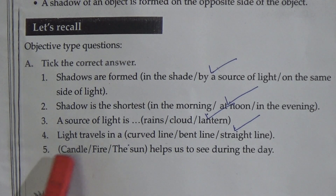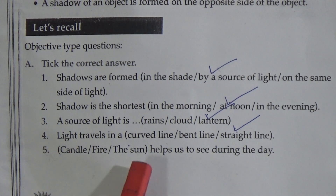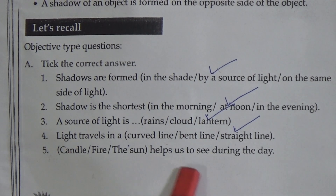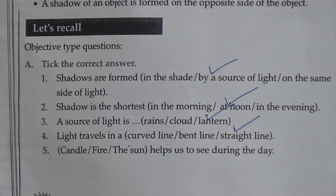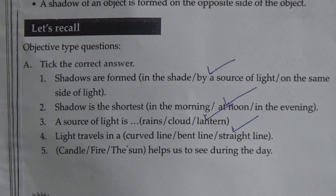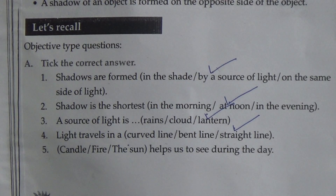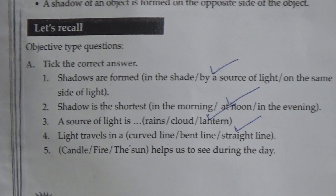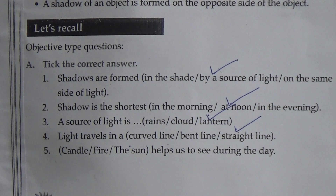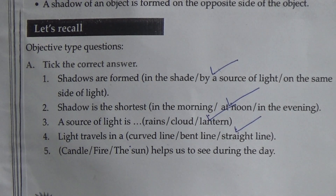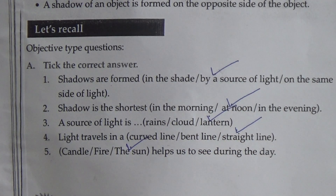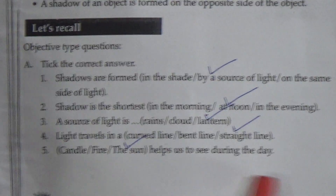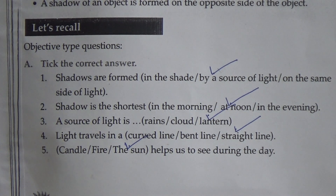Number 5: Candle, fire, or the sun — which helps us to see during the day? We know the sun is the main source of light, and in the daytime we get light from the sun. So we put the tick mark on 'sun.' The sun helps us to see during the day.